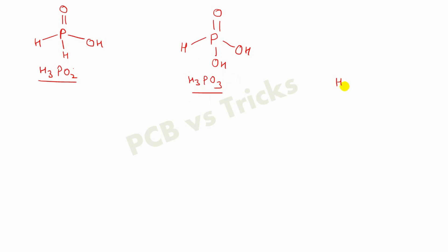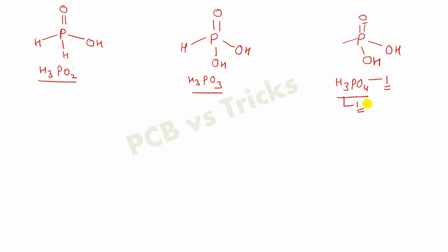Now we will see the structure of H3PO4. Following the same steps, I have filled one oxygen at the double bond, then placed two OH groups. But you can see that one extra oxygen and one extra hydrogen are left, so I will place another OH group at the empty position. In this way, the H3PO4 structure is completed.